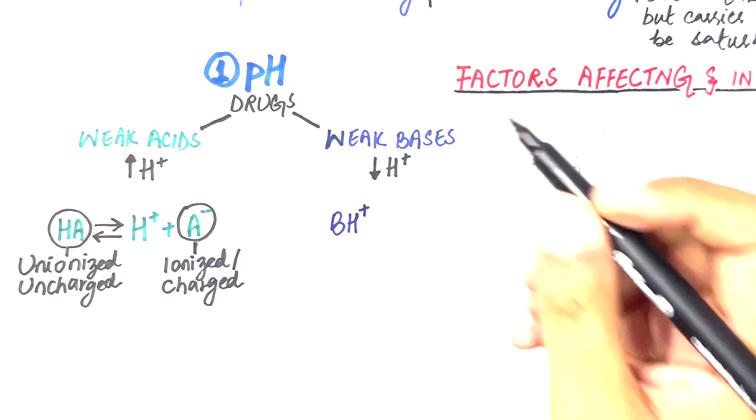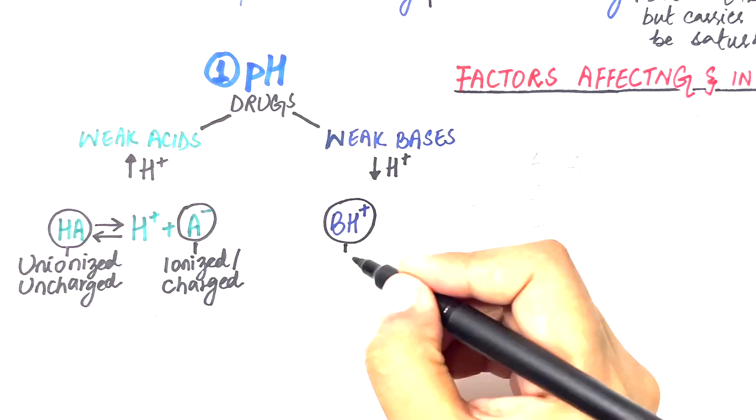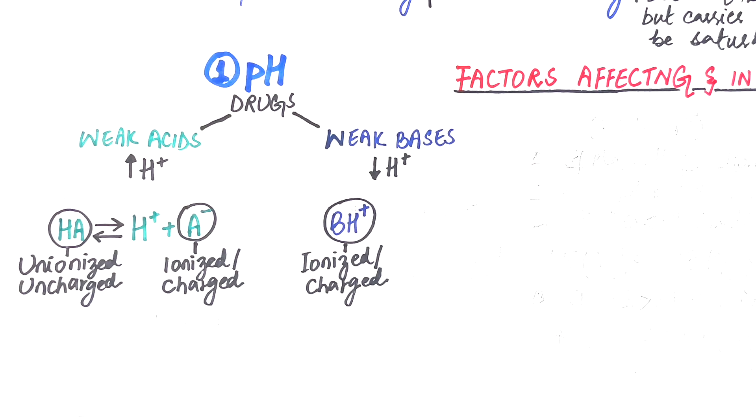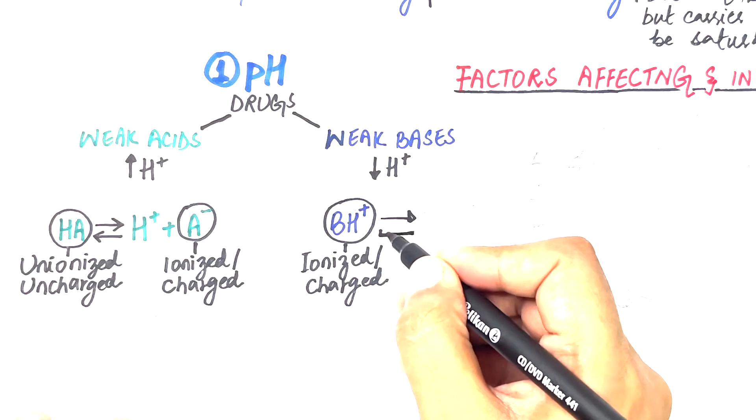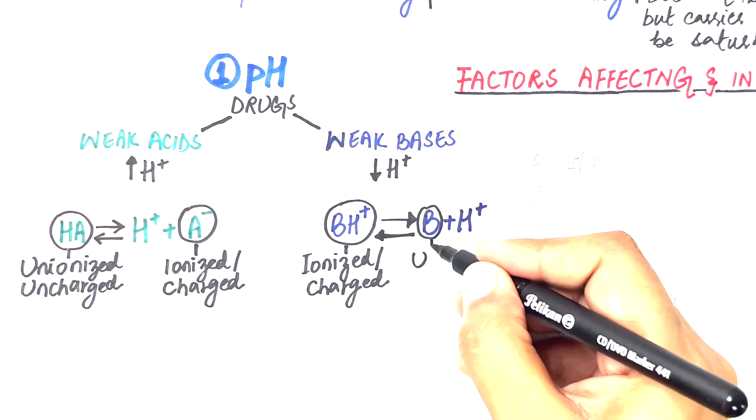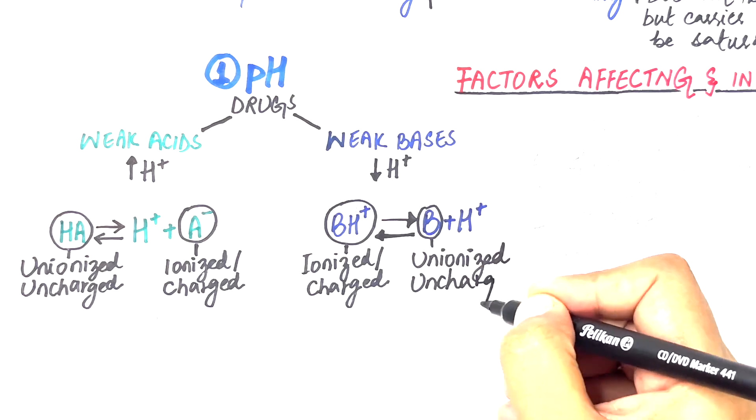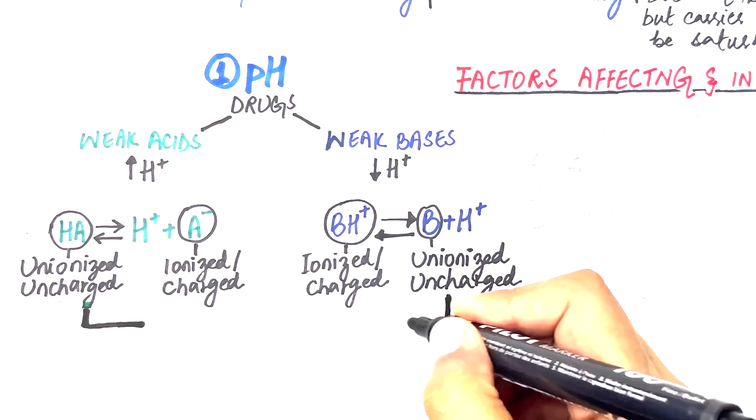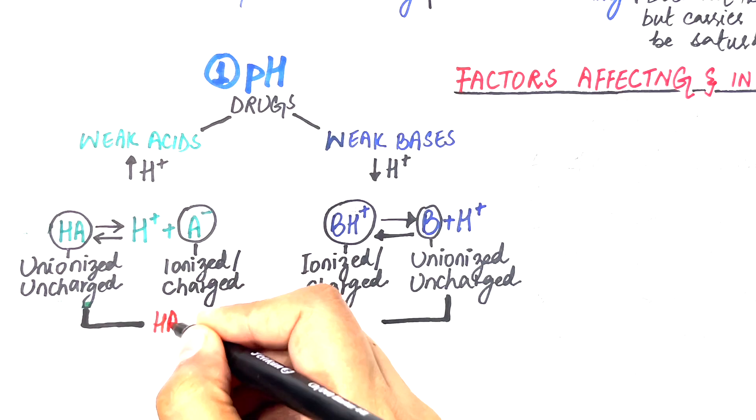However, weak bases abbreviated as BH plus comes in their ionized, charged, or polar form and loss of a proton from a weak base produces the uncharged or non-polar base B. For a drug to pass through a biological membrane it must be in its uncharged form, i.e. HA for weak acids and B for weak bases.